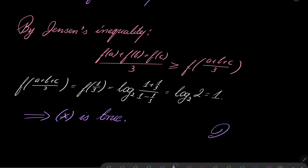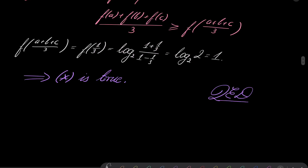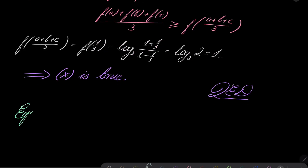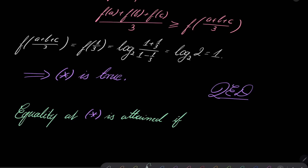Moreover, we can also say when equality is attained. Because our function is strictly convex, equality holds if and only if all of our numbers are equal, which happens at a = b = c = 1/3. This closes our proof. As you have seen, second derivatives, convex functions, and Jensen's inequality are very helpful when proving inequalities. Thank you very much for watching — I hope you've learned something new, and I will see you next time. Goodbye.